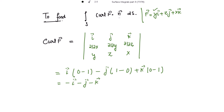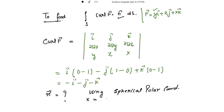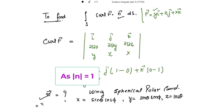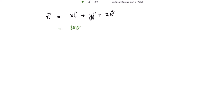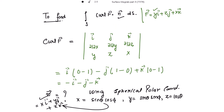Now to find the unit normal vector n using spherical polar coordinates: x = sin θ cos φ, y = sin θ sin φ, z = cos θ. The outward normal n vector equals xi + yj + zk, which in spherical coordinates is sin θ cos φ · i + sin θ sin φ · j + cos θ · k. Now finding the dot product of curl f with n vector.